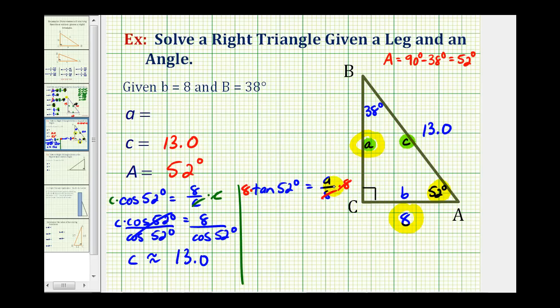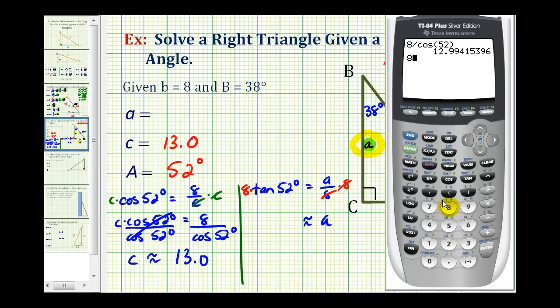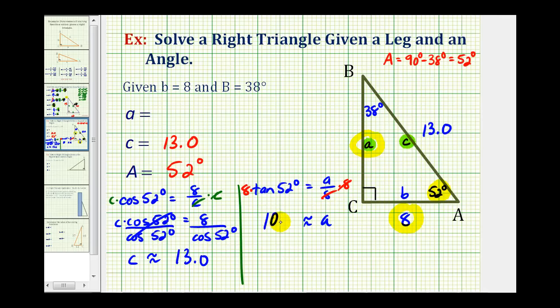Notice here this simplifies out. So a is approximately equal to this product here, eight times tangent 52 degrees. So eight tangent 52 degrees. So the length of side a to the nearest tenth would be approximately 10.2 units. I hope you found this helpful.